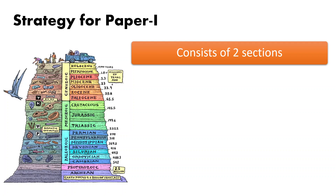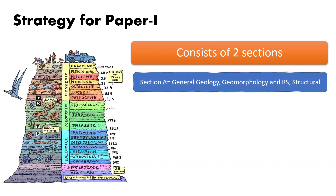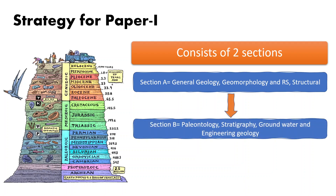Let us analyze the optional papers individually. In paper one there are six individual topics divided into two sections. Section A consists of general geology, geomorphology and remote sensing, and structural geology, while section B consists of paleontology, Indian stratigraphy, hydrogeology, and engineering geology. In the mains examination there will be eight questions spanning sections A and B. You have to answer five questions — question one from section A and question five from section B are compulsory, and then you must answer three more, choosing at least one from each section.